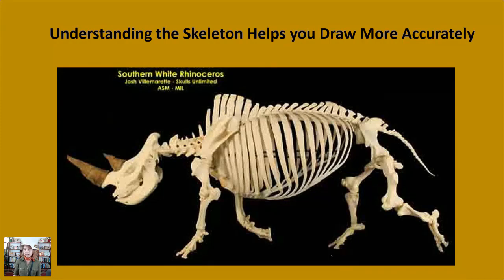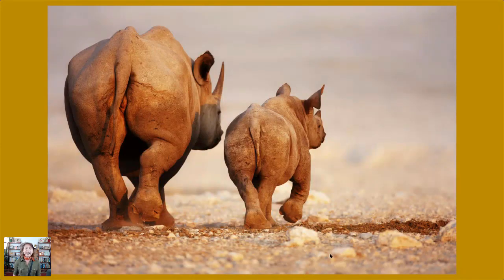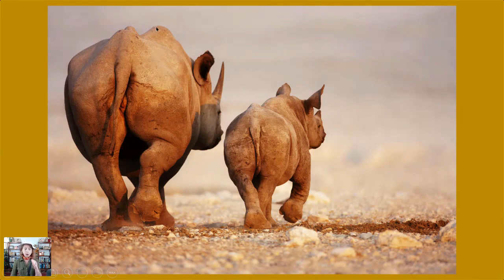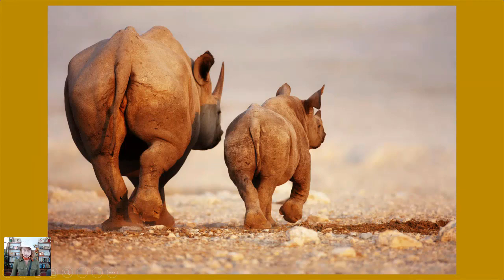Look at that hump! Here's one from behind — imagining that skeleton we just saw with those big vertical bones that stick up for the withers, the big hips, the giant barrel belly, and the angles of the ankle and the wrists. They look like they just have three toes — super big and strong and blocky.